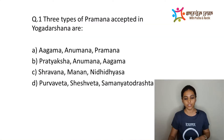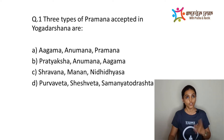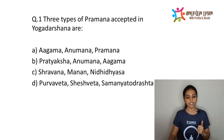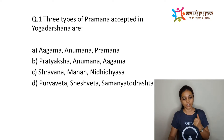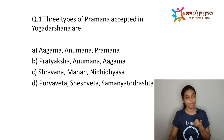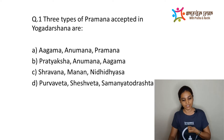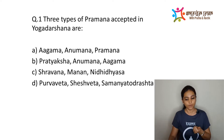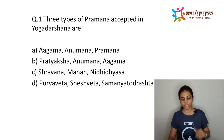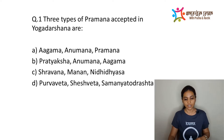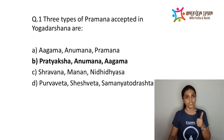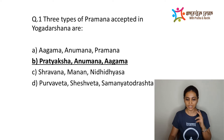The first question is: three types of Pramana accepted in Yoga Darshan are — options are (A) Agam, Anumana and Pramana, (B) Pratyaksha, Anumana and Agam, (C) Shavana, Manana and Nidhidhyasana, and (D) Purvavata, Sheshavata and Samanito Drashta. The correct answer is option B: Pratyaksha, Anumana and Agam.